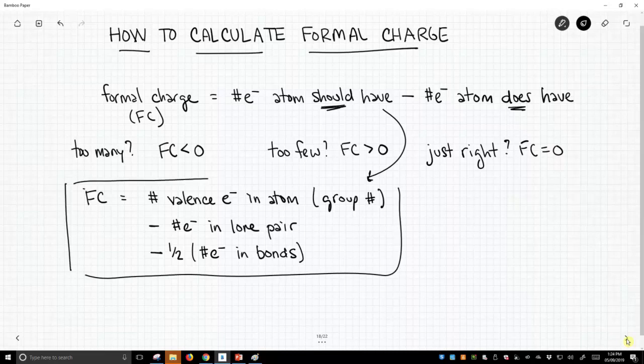Like I say, there are many variations of this formula, but if you really break them down, they all say the same thing. We're taking the number of electrons that the atom should have, and that's in its neutral state, and then we take away, subtract out the number of electrons in the lone pairs, and then take one half of the number of electrons that we find in the covalent bonds. And that will give us our formal charge.